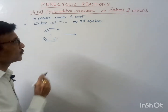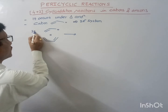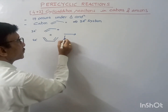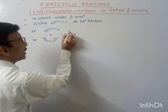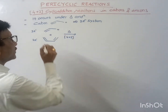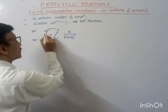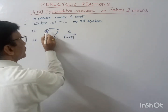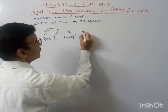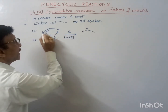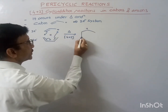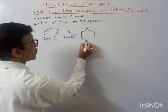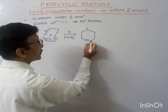So if we have this butadiene, this 2-electron system which is the cation and this is our 4-electron system, it will undergo 4 plus 2 cycloaddition reaction under thermal condition. We will get the cycloaddition reaction product — a cyclic product — and a positive charge will be present. One new sigma bond is created here, another new sigma bond here, and one new pi bond is formed.